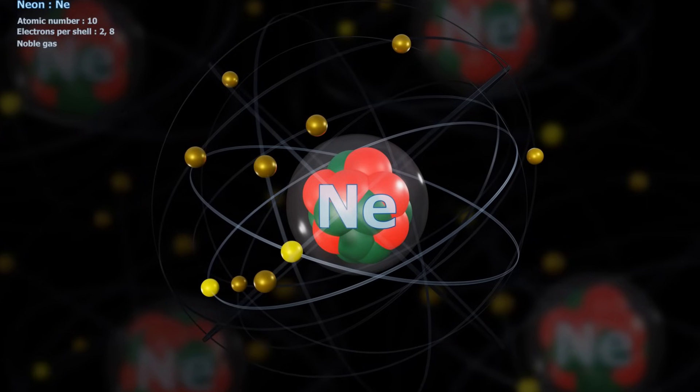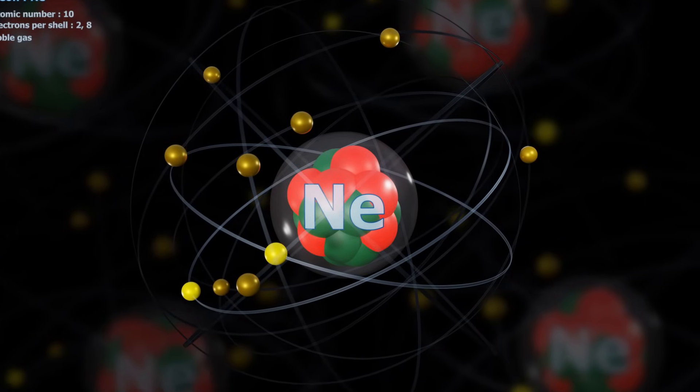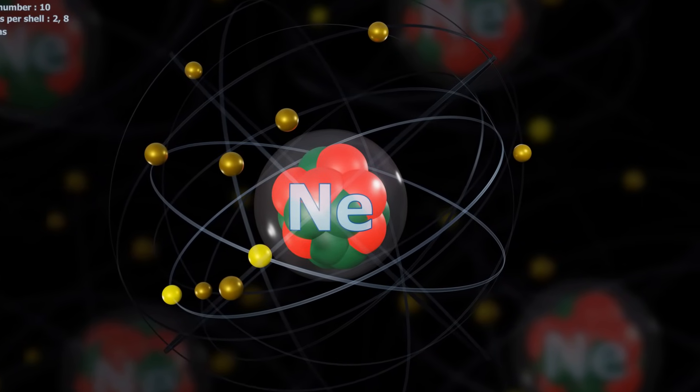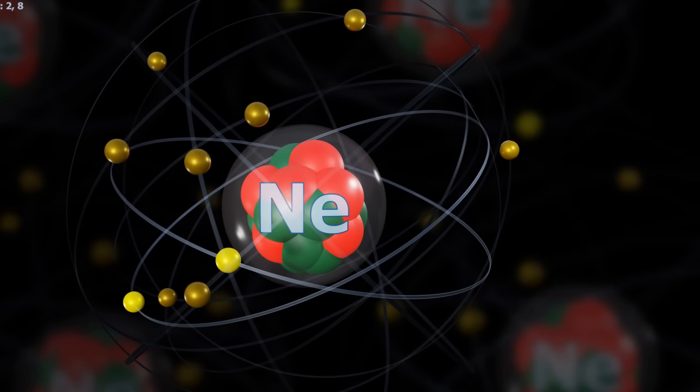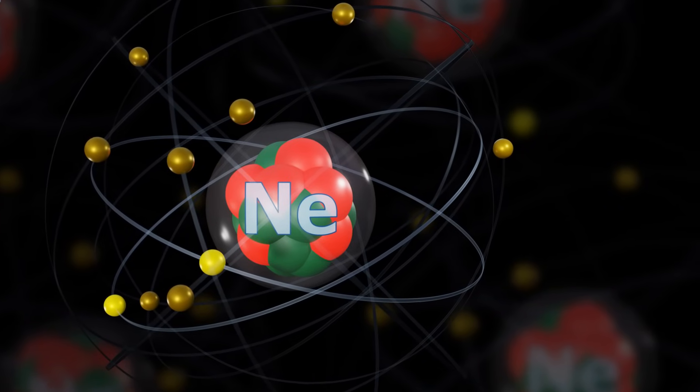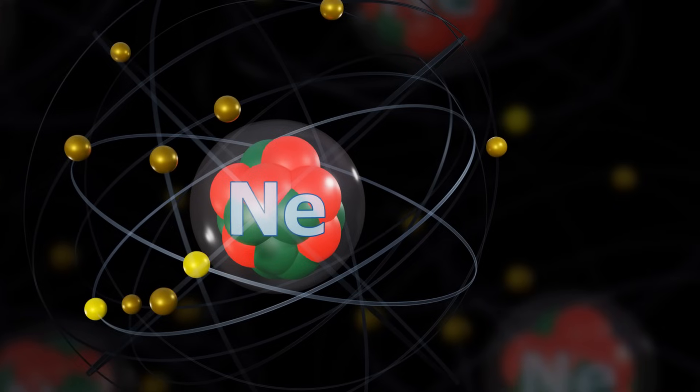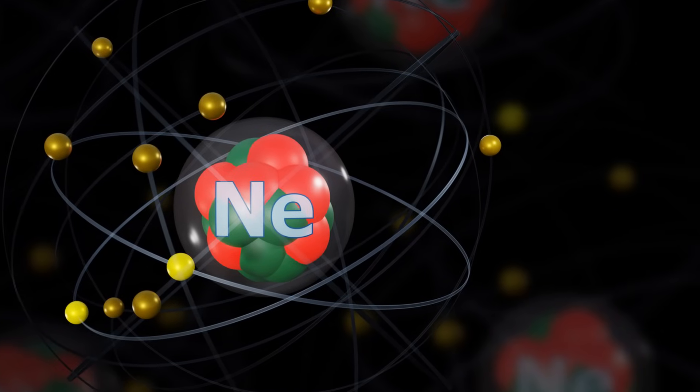Next, meet the neutrons. Neutrons are the proton's neighbors, and they also live in the nucleus. As their name suggests, neutrons are neutral. They don't have a positive or a negative charge. They are perfectly balanced. Their main job is to be the peacemakers in the nucleus.